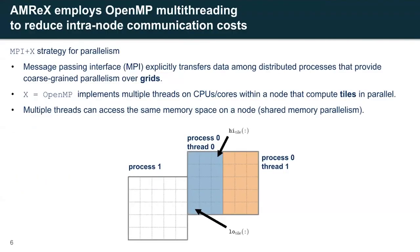Let me first introduce the parallelism strategy in AMREX. It uses an MPI-plus-X strategy where the Message Passing Interface, or MPI, is responsible for distributing work and transferring data among different processes. For example, two different square grids could be assigned to different MPI processes. For parallelism over CPUs, AMREX further divides the grid into regions known as tiles — for example, the blue tile or the orange tile — that can then be worked upon by different OpenMP threads that have shared access to a memory space and hence avoid the communication cost.